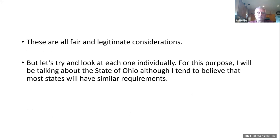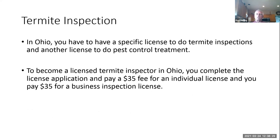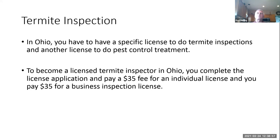They're all fair and very legitimate considerations. But let's try and look at each one individually — please remember I live in the state of Ohio, so I'm referencing what I know, but I think this is pretty consistent in a lot of states. To be a termite inspector in Ohio, I have to have a very specific license to do that inspection and a separate license to do pest control treatment. To become a licensed wood-destroying insect/termite inspector in Ohio, all I have to do is complete the license application, pay a $35 annual fee, and pay $35 for a business inspection license.